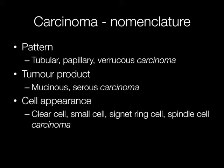Finally, carcinomas may be named according to the appearance of the individual cells. A clear cell carcinoma has, of course, clear cells. In signet ring carcinomas, the nucleus is pushed to one side by a blob of mucin, producing a characteristic signet ring type appearance.